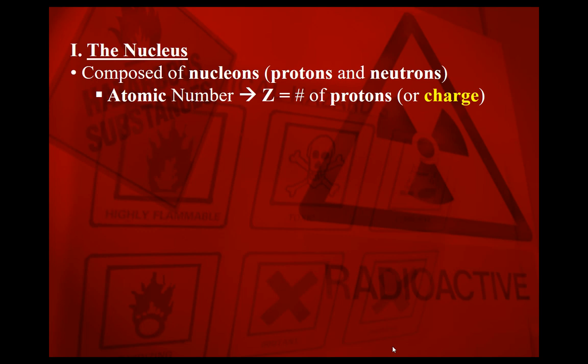Our atomic number, which I'm going to represent with the variable capital Z, indicates the number of protons in a particular nucleus, or the charge. Focusing just on the nucleus, the charge would be dependent completely on the number of protons. For example, lithium has an atomic number of three, which means it has three protons and the nucleus would have a charge of plus three.